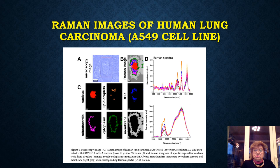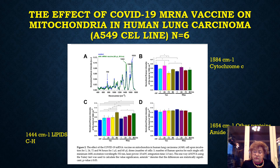Here we have the Raman images of human lung cancer cells — the microscopy image, the Raman image, and images of single organelles: nucleus, lipid droplets, endoplasmic reticulum, mitochondria, cytoplasm, and the membrane, along with the corresponding spectra. We found that for the characteristic band of cytochrome at 1584 cm⁻¹, we observe a decrease of the signal with respect to the control. The dark blue represents the control without any vaccination, and vaccination leads to a decrease of the signal.